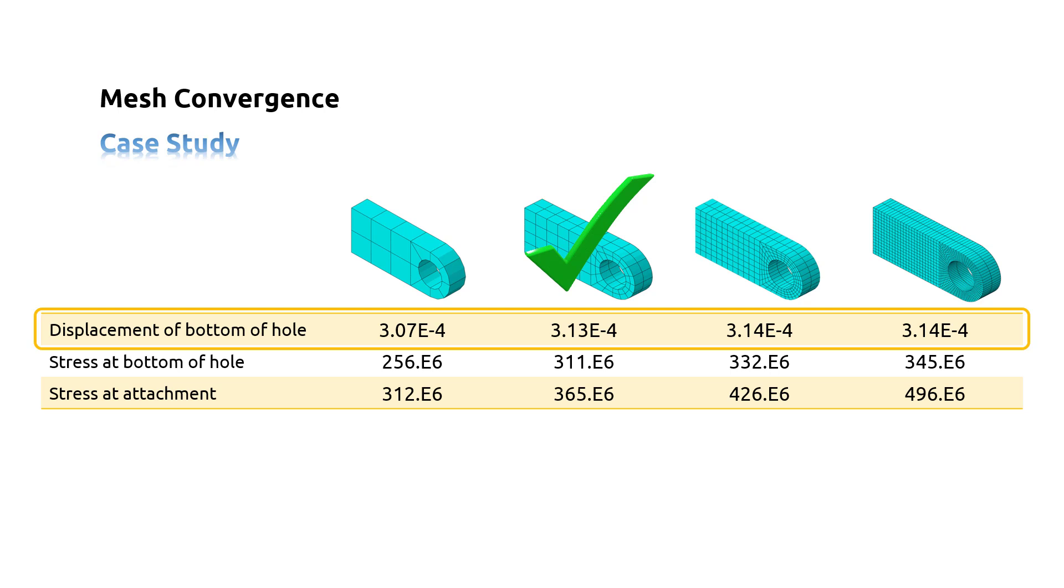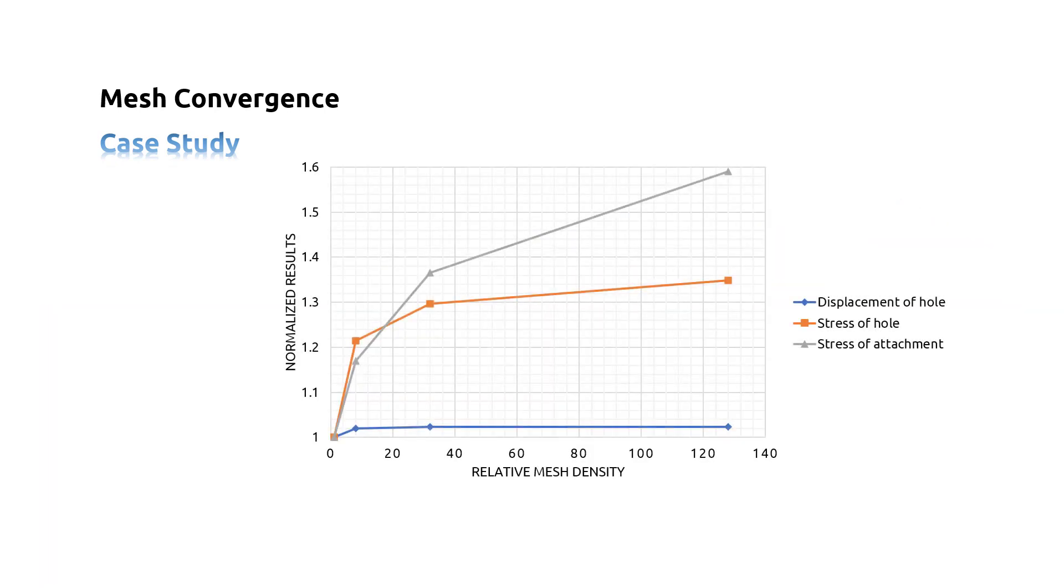Now let's take a look at the convergence plot of the results. All the results are normalized with respect to the values predicted by the coarse mesh. The peak stress on the bottom of the hole converges much more slowly than the displacements. Because stress and strain are calculated from the displacement gradients, a much finer mesh is required to predict accurate displacement gradients than is needed to calculate accurate displacements.